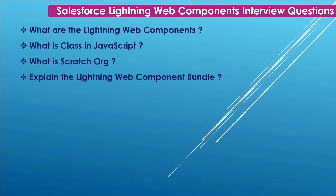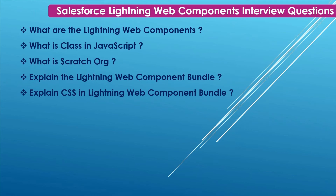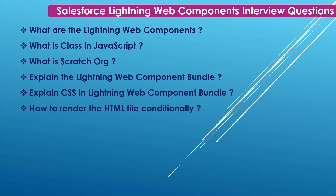Next: What is a Lightning Web Component bundle? An LWC bundle contains an HTML file, JavaScript file, and a metadata configuration file. These files are created once you create a Lightning Web Component. We can also create a CSS file for styling purposes and an SVG file for displaying an icon.